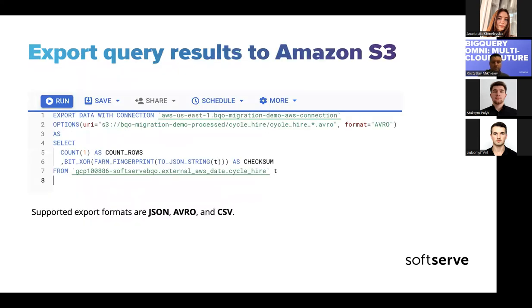To export results to S3, there is a special statement: EXPORT DATA WITH CONNECTION. This allows you to store results of your query on the same public cloud where the source of the query resides, so you don't move results back to GCP. In this case you need write permissions to the bucket where you want to write results. If you don't export data, you don't need any write permissions.